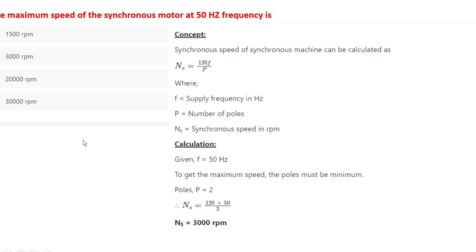The next question: the maximum speed of a synchronous motor at 50 Hz frequency is — options are 1500 rpm, 3000 rpm, 20,000 rpm, or 30,000 rpm. The synchronous speed formula is Ns = 120f/P. With f = 50 Hz and minimum poles P = 2, Ns = 3000 rpm. The correct option is 3000 rpm.